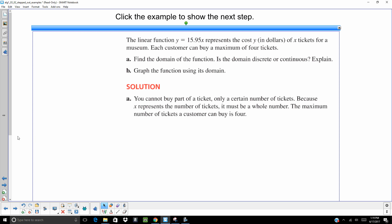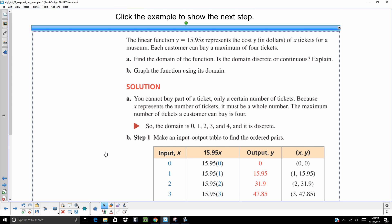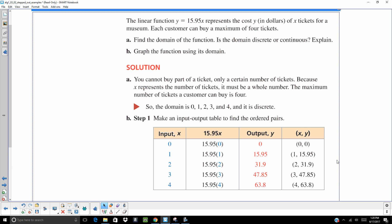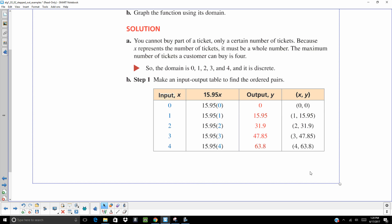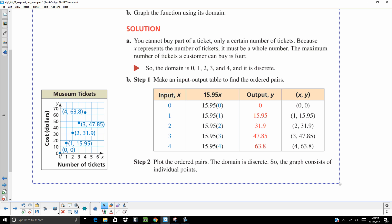Well, because you can't buy part of a ticket, it's going to be discrete. You can buy zero, one, two, three, or four tickets, but you can't buy one and a half tickets. That doesn't work that way. Then we're going to make an input output table and graph it. And if you were to draw a line, that would be linear.